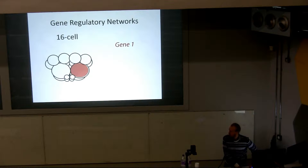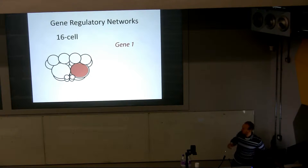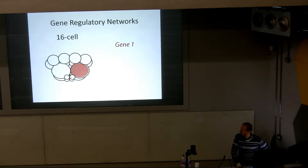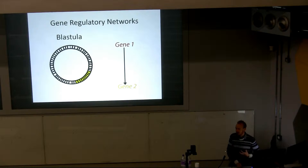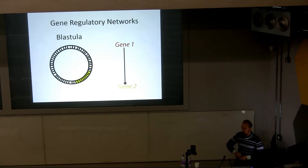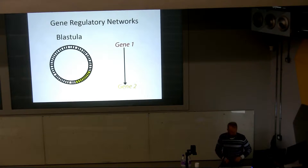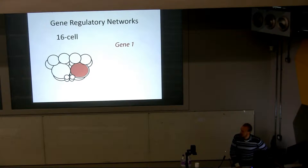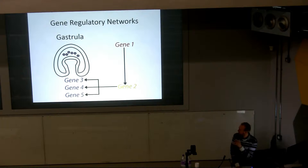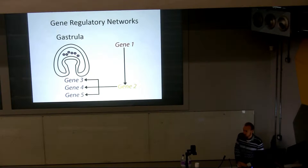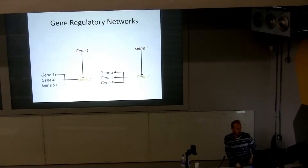When I talk about gene regulatory networks, let's say we have a 16-cell stage embryo. We have gene 1 expressed in one of these macromeres, and gene 1 is then responsible for regulating the activity—kicking off the expression of gene 2. Gene 2 is being expressed later in development in the cells that arise from this macromere, and then later in development, gene 2 regulates the expression of genes 3, 4, and 5.